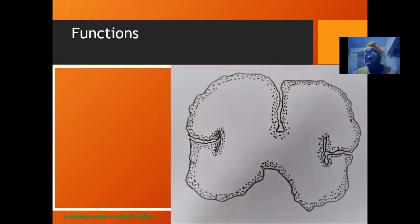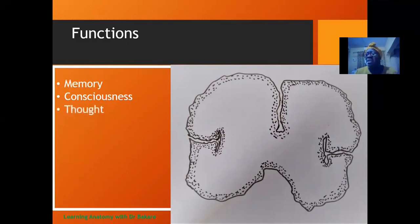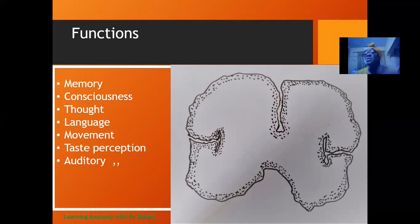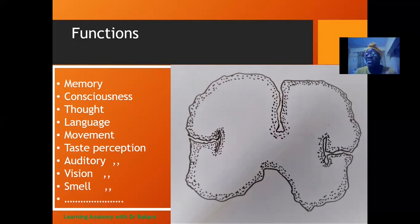The functions of the cerebral cortex include memory, consciousness, proprioception — as the hand is moving or the neck is moving, we are aware of all this. Also thoughts, we are able to reason, language, and movements. Different kinds of movements are controlled by activities within the cerebral cortex. Also taste perception, auditory function — we are able to hear through the activities of the cerebral cortex — vision, smell which is olfactory function, and other functions covered during this lecture.